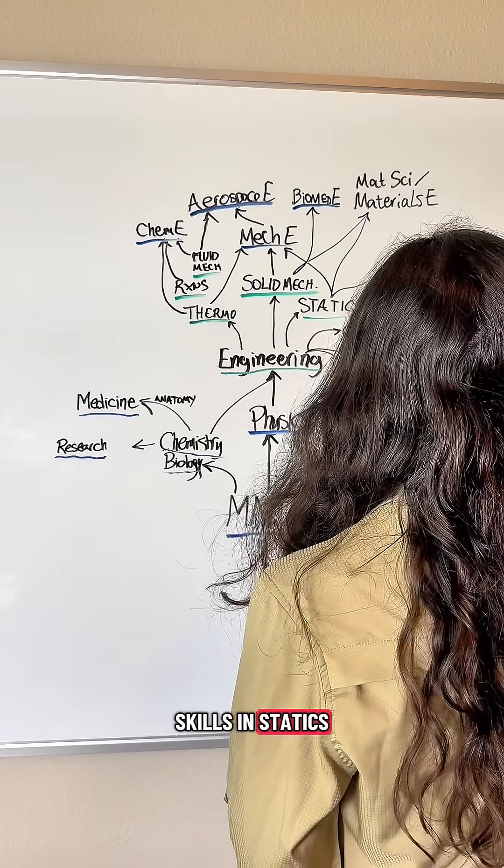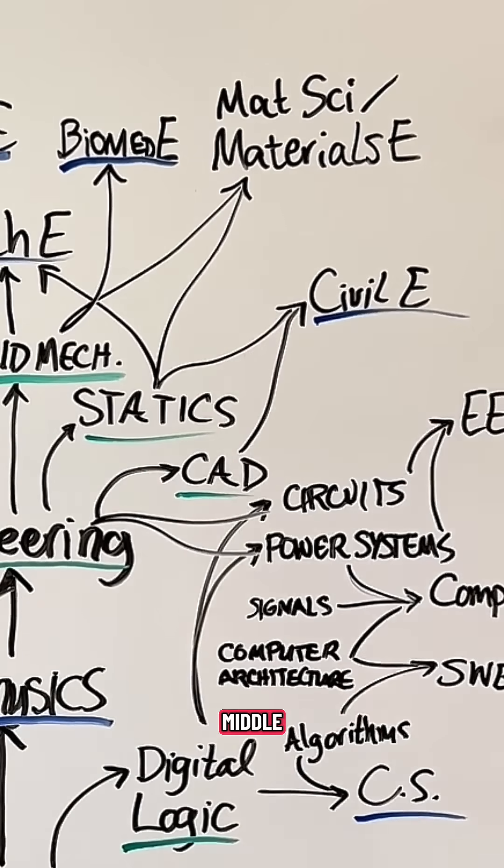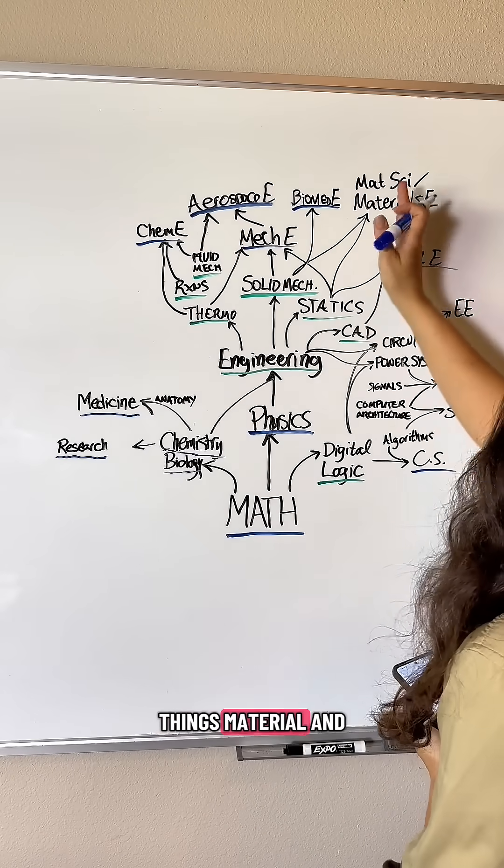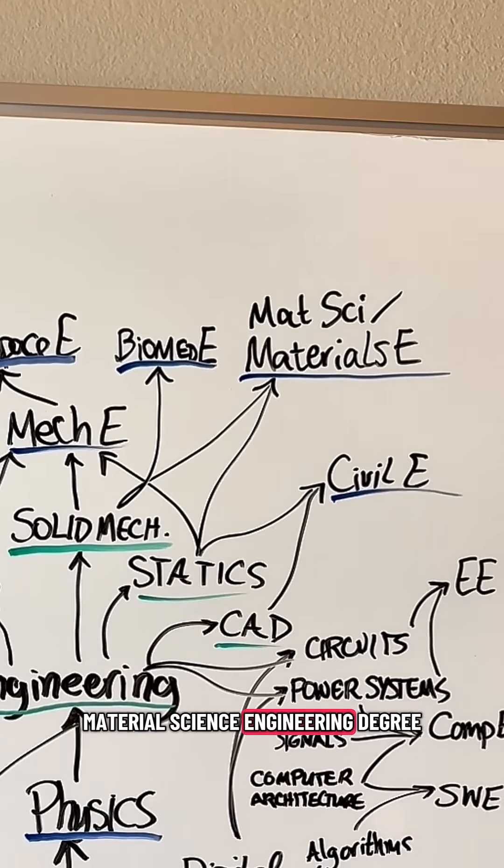Here we have skills in statics and CAD growing into a civil engineering skill tree. And in the middle, skills with all things material and their application in engineering leads to a material science engineering degree.